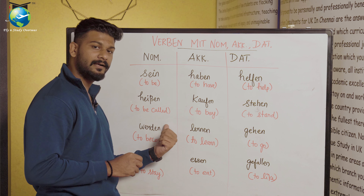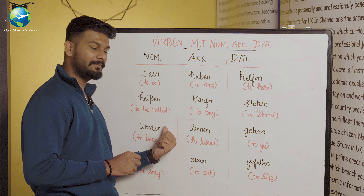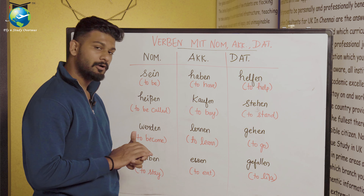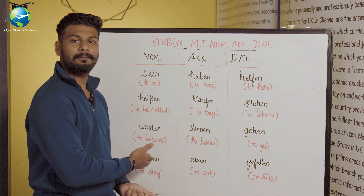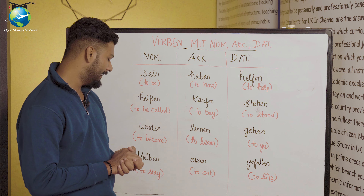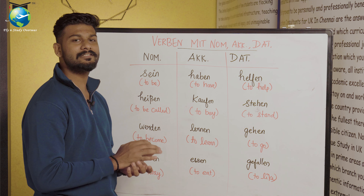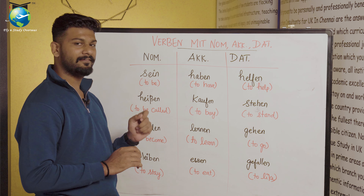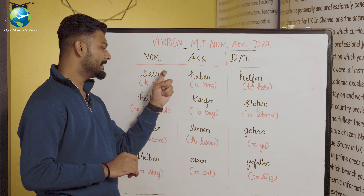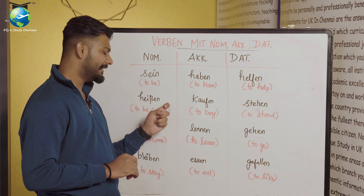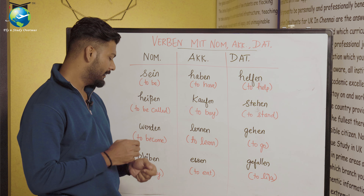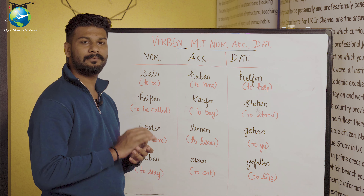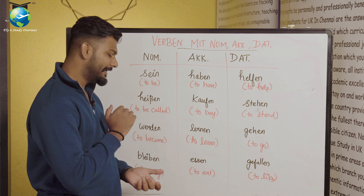The third verb is werden, which means 'to become.' The fourth verb is bleiben, which means 'to stay.' So in nominative case, the verbs are: sein, heißen, werden, and bleiben.